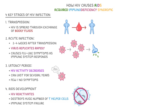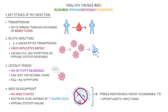Because AIDS compromises the immune system so severely, this makes individuals highly vulnerable to opportunistic infections. So if they were to catch something like pneumonia, it's likely to kill them. Individuals with AIDS are also more vulnerable to certain types of cancer as well.